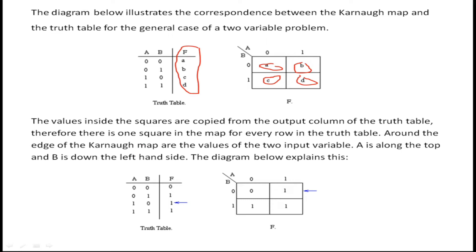Around the edge of the K-map are the values of the two input variables. The values of the two input variables along the edge of this square K-map are 0 and 1. So the value of B will be either 0 or 1, and similarly the value of variable A can be either 0 or 1.